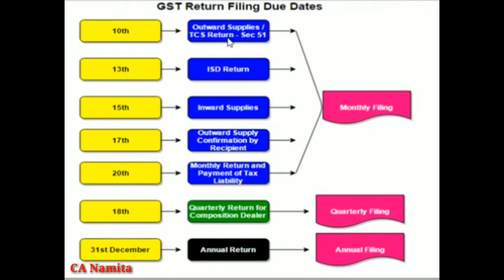Summary of due dates: for outward supplies, TDS, and TCS — GSTR1 due date is the 10th. ISD files by the 13th. Inward supply details are due within 15 days. Monthly return GSTR3 is due by the 20th. Quarterly return due date is the 18th. Annual return date is on or before 31st December in GSTR9.